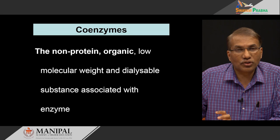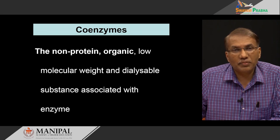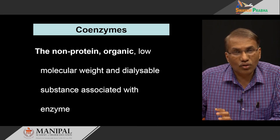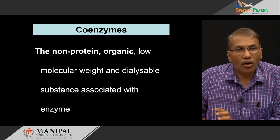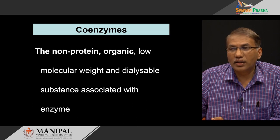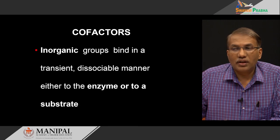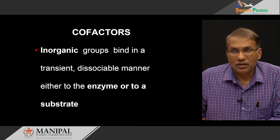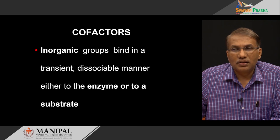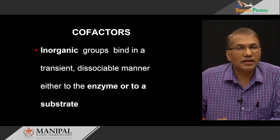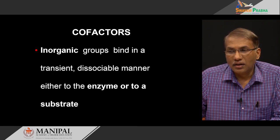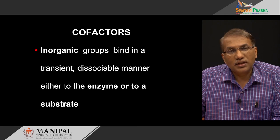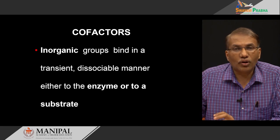The prosthetic group can be further divided into two parts. One is a coenzyme - if it is a coenzyme, it has to be an organic molecule. Similarly, if it is a non-organic molecule, then it is called a cofactor. Cofactor is an inorganic group which can bind to an enzyme in a transient manner, or it can sometimes bind to a substrate as well, but both facilitate the reaction. They are called cofactors.